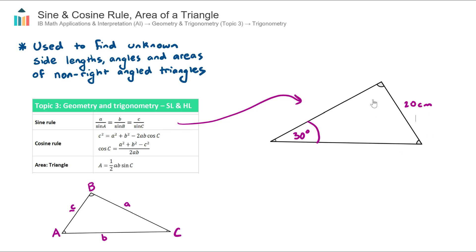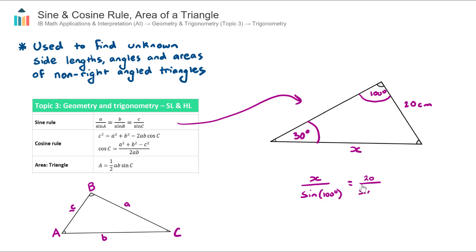In this example, we'll also probably be given another angle — say 100 degrees — and we're asked to find this side length, let's call it X. We set up the sine rule: a side length divided by the sine of its opposite angle. So X divided by sine of 100 equals 20 divided by sine of 30. We now have one equation with one unknown X and can go ahead and solve for X.